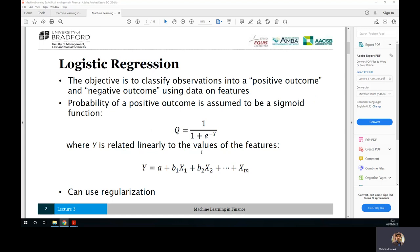The objective is to classify the observations into a positive outcome and a negative outcome using data on features. What does it mean? It means that using logistic regression, we have got two classes of data, two classes of observations. One of them are positive and one of them are negative.